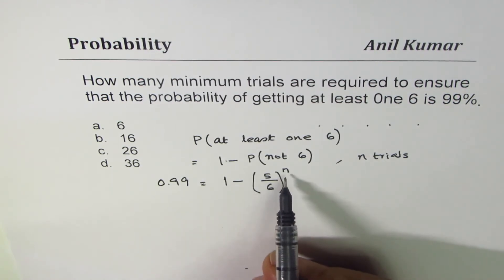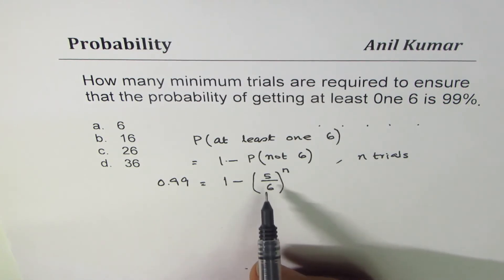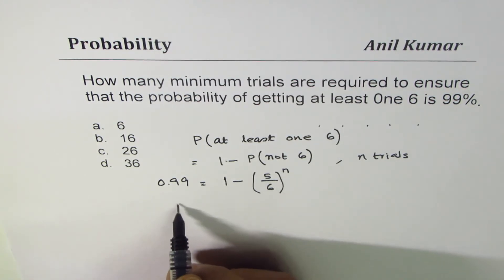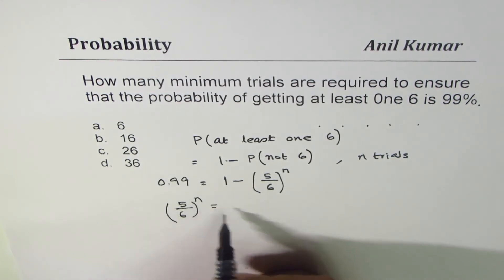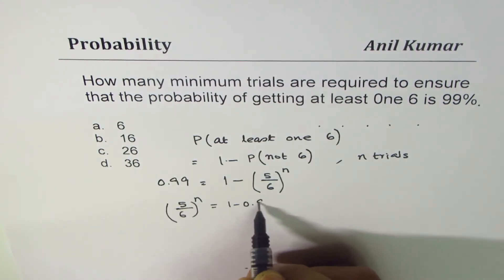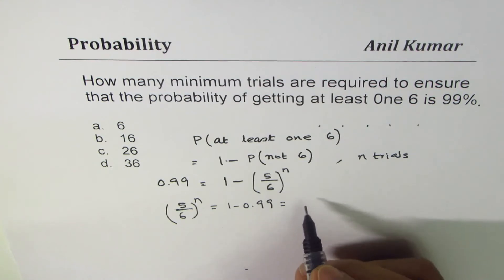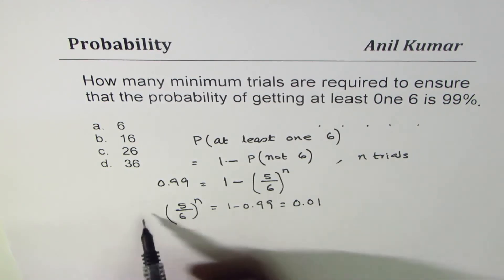To find the value of n we can use logarithms. So we can write this as (5/6)^n = 1 - 0.99, which is 0.01. And if you take log both sides, then you get log of (5/6)...